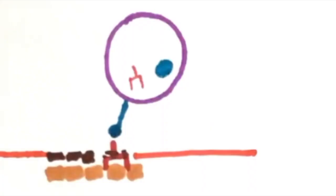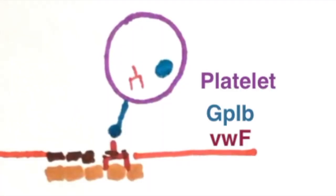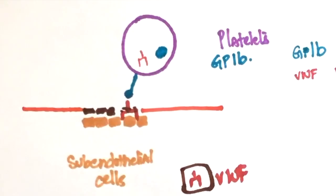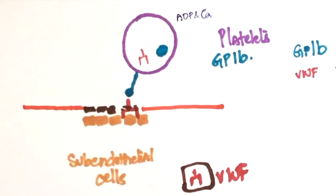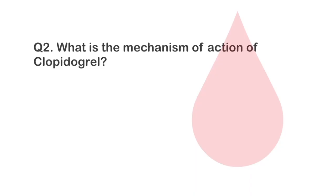This whole thing forms a complex, platelets GP1B, von Willebrand factor and subendothelial collagen. Once this takes place, ADP and calcium are released. Question 2.